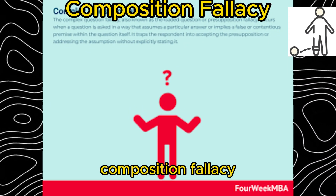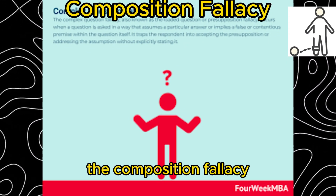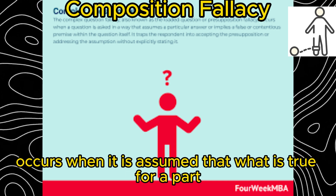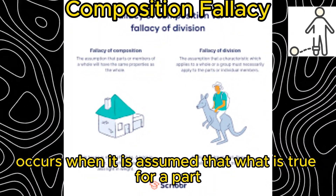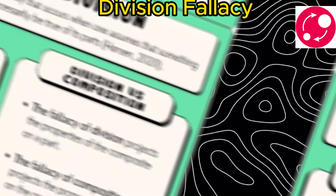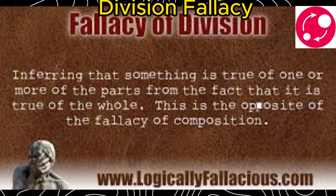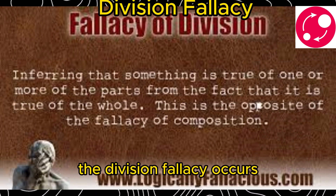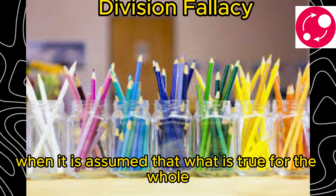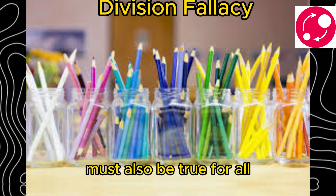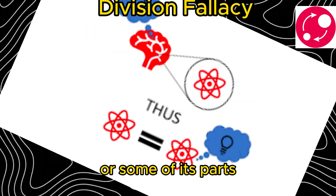Composition fallacy. The composition fallacy occurs when it is assumed that what is true for a part is also true for the whole. Division fallacy. The division fallacy occurs when it is assumed that what is true for the whole must also be true for all or some of its parts.